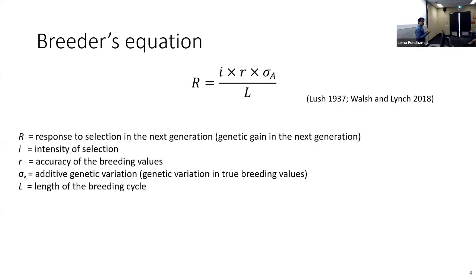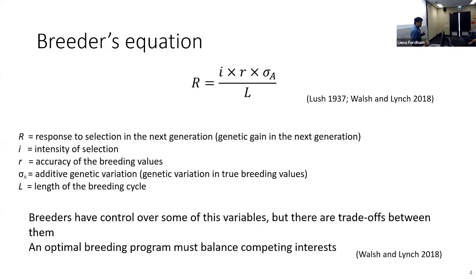These two concepts are captured in the breeder's equation, a good guideline telling us how variables interact and affect the response to selection in the next generation — also known as genetic gain. The big R in the equation represents this response to selection, which is directly affected by the intensity of selection, the accuracy of breeding values, and the genetic variability of true breeding values in the population. It is inversely affected by the length of the breeding cycle. An optimal breeding program has to balance these competing interests.